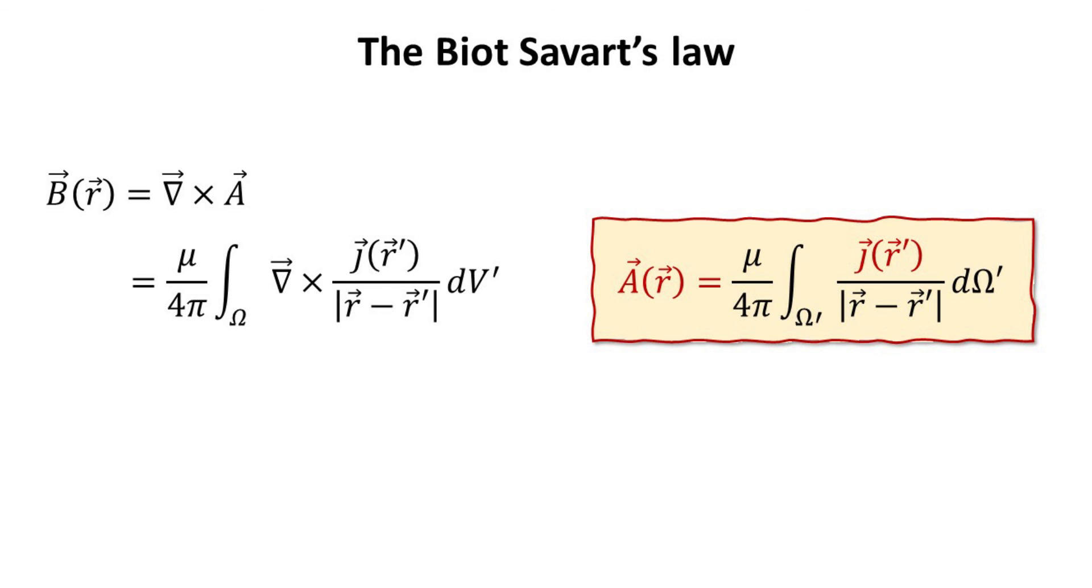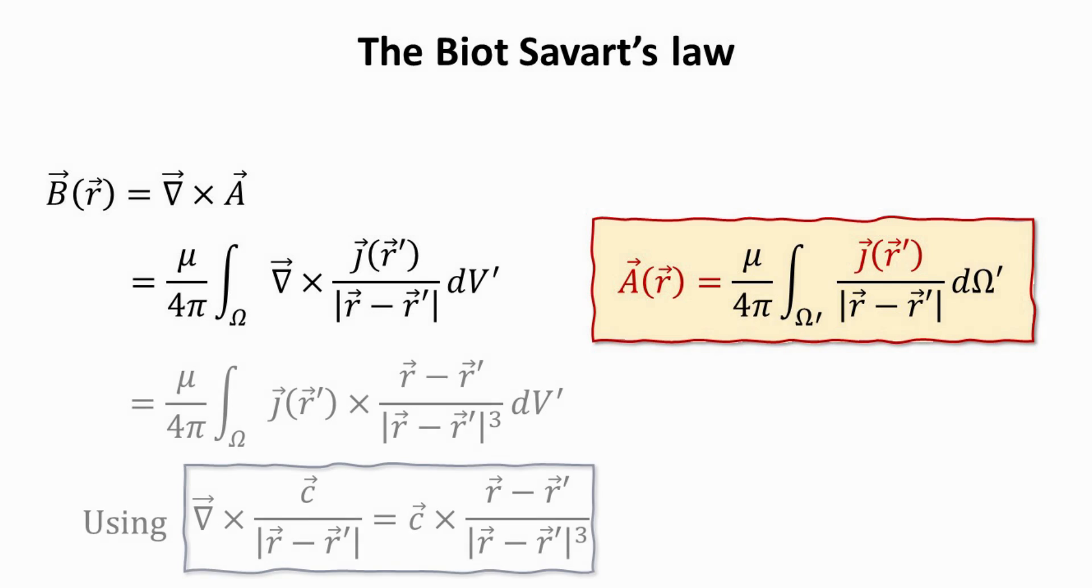Finally, the magnetic field can be obtained from the curl of the vector potential. To arrive at the final result, we need to take the curl in the integrand.